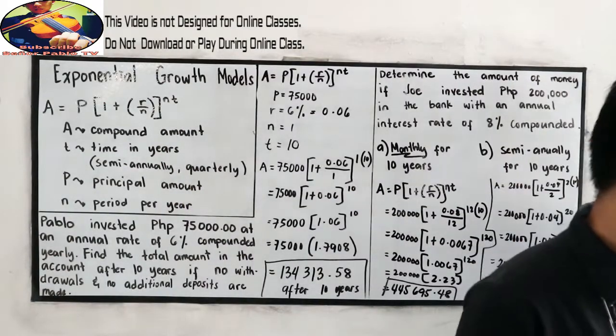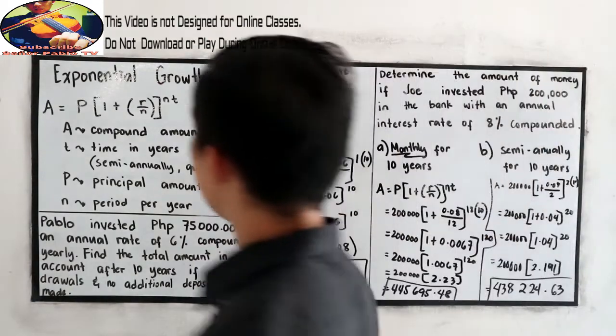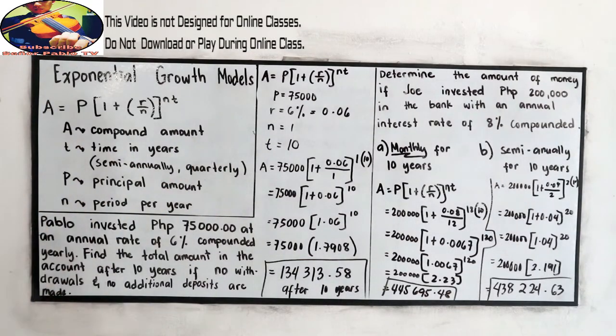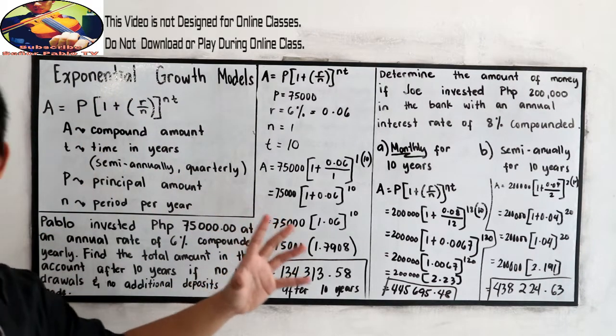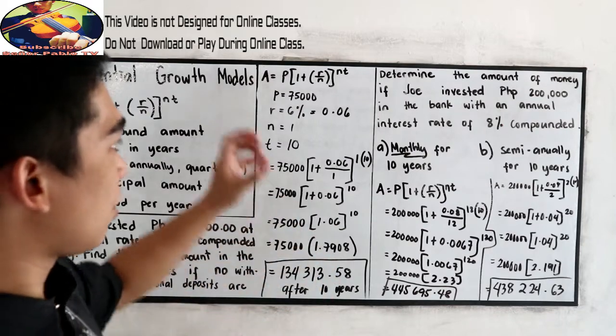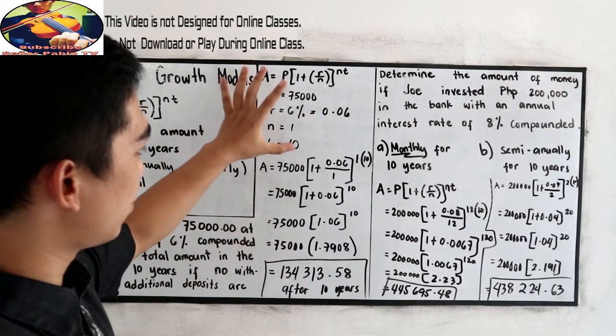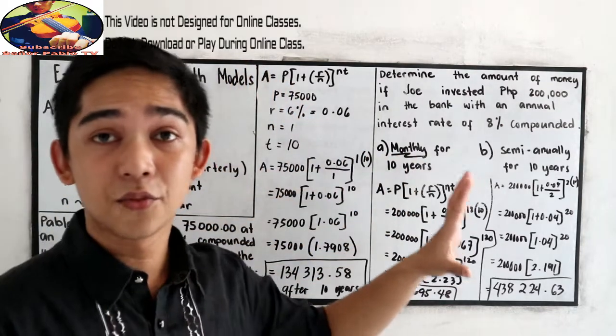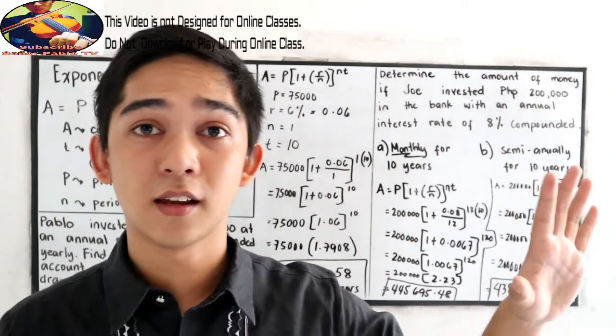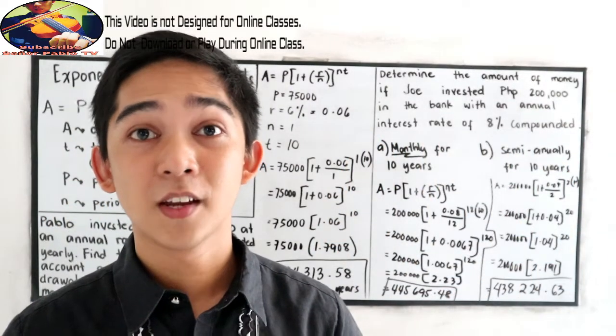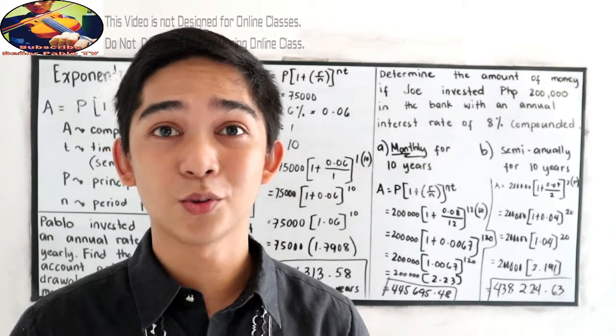That's the explanation of exponential growth, a lot of numbers. Just don't forget our rules, of course, the PEMDAS, the order of operations. Thank you for watching, Senior Pablo TV.